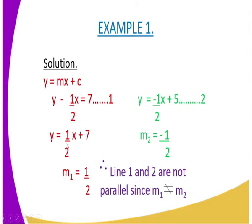You can see the place of m is replaced by 1 over 2. In the second equation, we have y equals negative half x plus 5. Therefore, the gradient is represented by negative half. You can see gradient 1 is half and gradient 2 is negative half. Since half is not equal to negative half, and the two lines have different gradients, the two lines are not parallel.